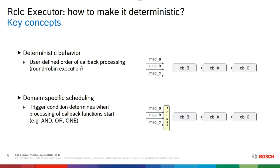We came up with two basic concepts. The first is a user-defined order of callback processing — for example, callbacks in order B, A, then C. If three messages are available, all callbacks are always executed in this particular order. This has been implemented for timers, services, clients, and so on. The second concept is a trigger condition, which can be used to synchronize between messages: when two messages are available, you can define a trigger condition like AND, or one particular subscription, or an advanced custom condition, and then execution proceeds with the predefined callback order.